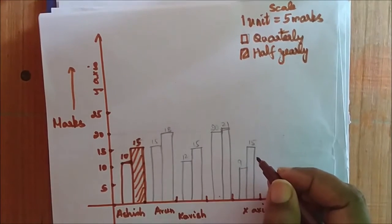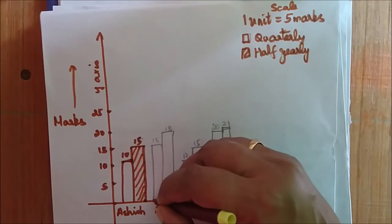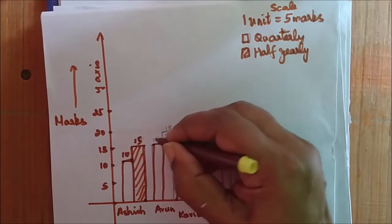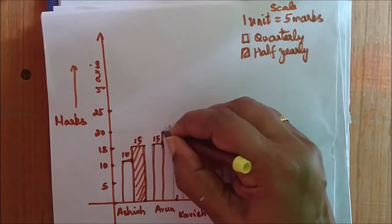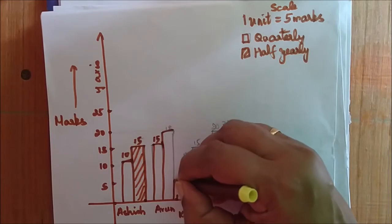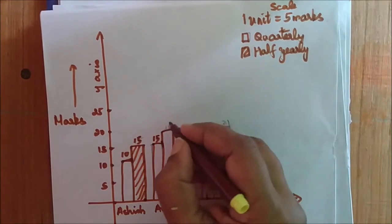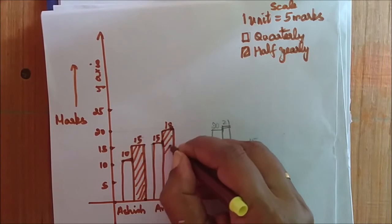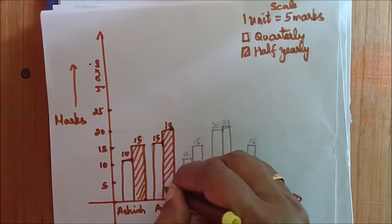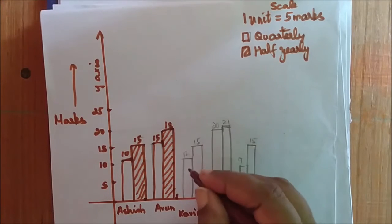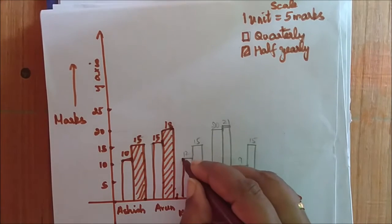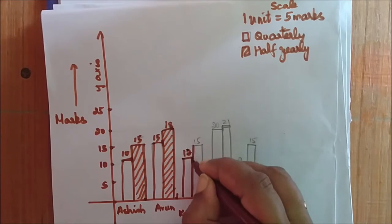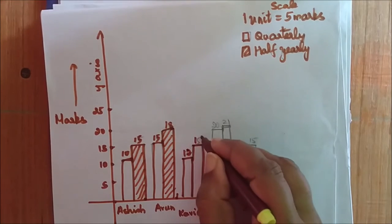Now the next one is Arun. How much marks he has scored? He has scored 15 in quarterly. So I draw the bar graph for that. And he has scored 18 in half-yearly. So I will shade the half-yearly. Similarly, we will draw for Kavish. Kavish scores 12 in quarterly and 15 in half-yearly.